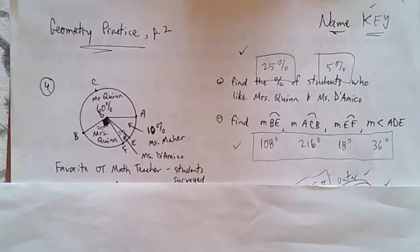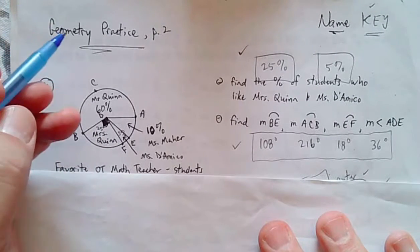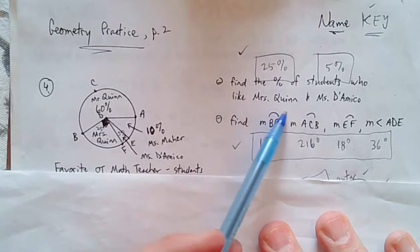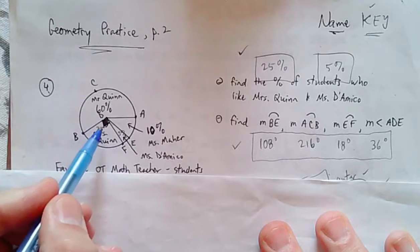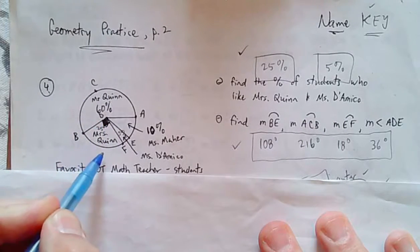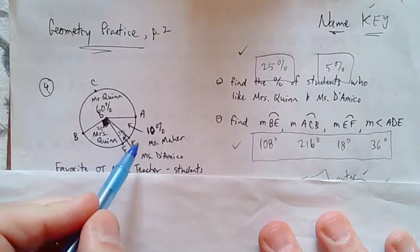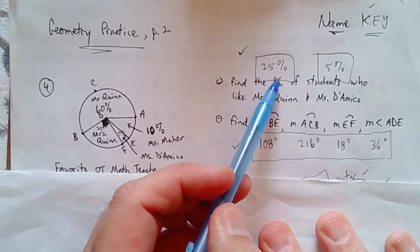Question four, I think most people did pretty well with this also. The percentage of students who like Mrs. Quinn and Ms. D'Amico, if you add up the percentages, the right angle for Mrs. Quinn implies it's 90 degrees, which would be 25%. And then the leftover percentage is 5% for Ms. D'Amico. So that's what I was looking for.